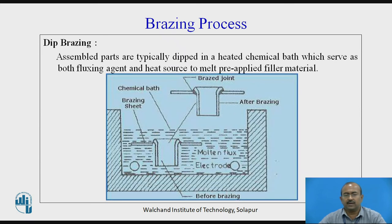Dip brazing: assembled parts are typically dipped in a heated chemical bath which serves as both a fluxing agent and heat source to melt pre-applied filler material. The setup shows a bath of molten flux. Before and after brazing, you can see the assembly of two elements. The brazed joint is visible between the container and the holder handles.